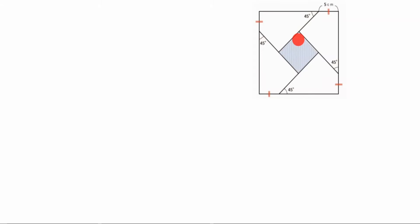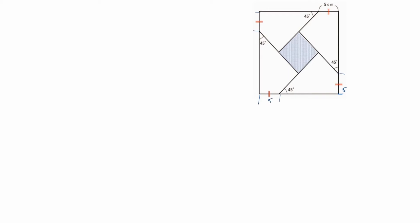Hi friends, welcome to my channel 'Excellent Ideas in Education.' Today we are going to find the shaded region. You see the 45-degree angles are given here, here, here, and here. The only measurement given is 5 centimeters here. This portion and this portion are the same — all is 5 centimeters. You see: this is 5 centimeters, this is also 5, this is also 5 centimeters.